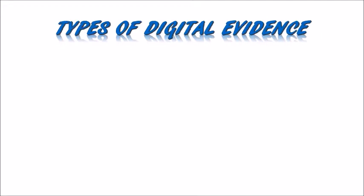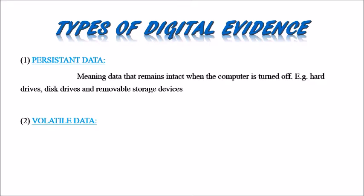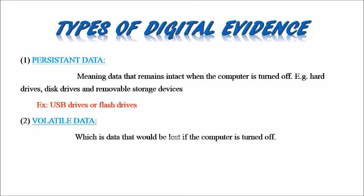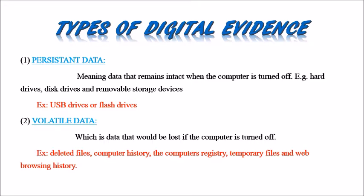Digital evidence is divided into two types. The first is Persistent Data, which remains intact when the computer is turned off — for example, hard drives, disk drives, and removable storage devices such as USB drives or flash drives. The second is Volatile Data, which is data that would be lost if the computer is turned off — for example, deleted files, computer history, computer registry, temporary files, and web browsing history.